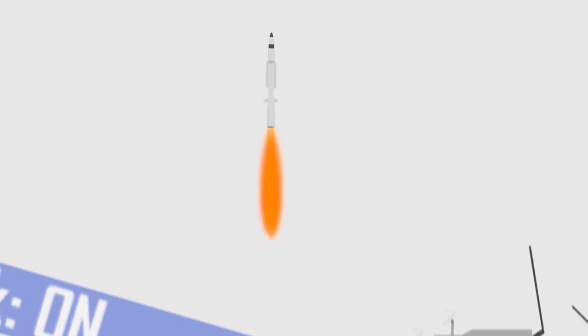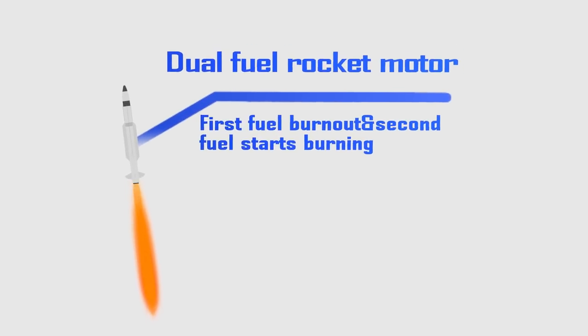Later, the target missile will enter the SPY-1's detection range. Around 7 seconds after launch, the first stage MK-72 booster burns out and the second stage starts burning. The second stage MK-104 dual fuel rocket motor takes the missile higher in the atmosphere. The second stage burns out while the missile is still inside the atmosphere.